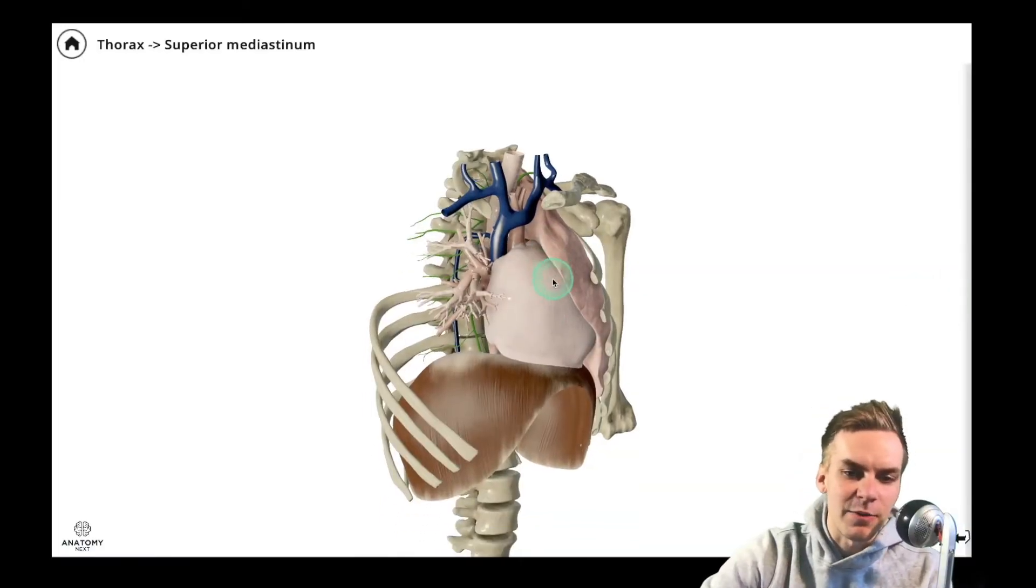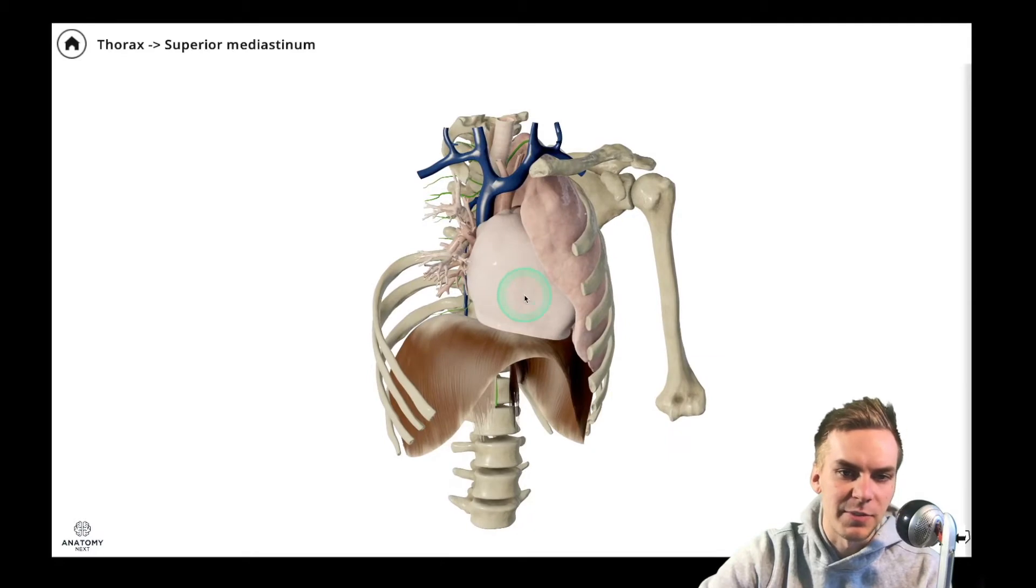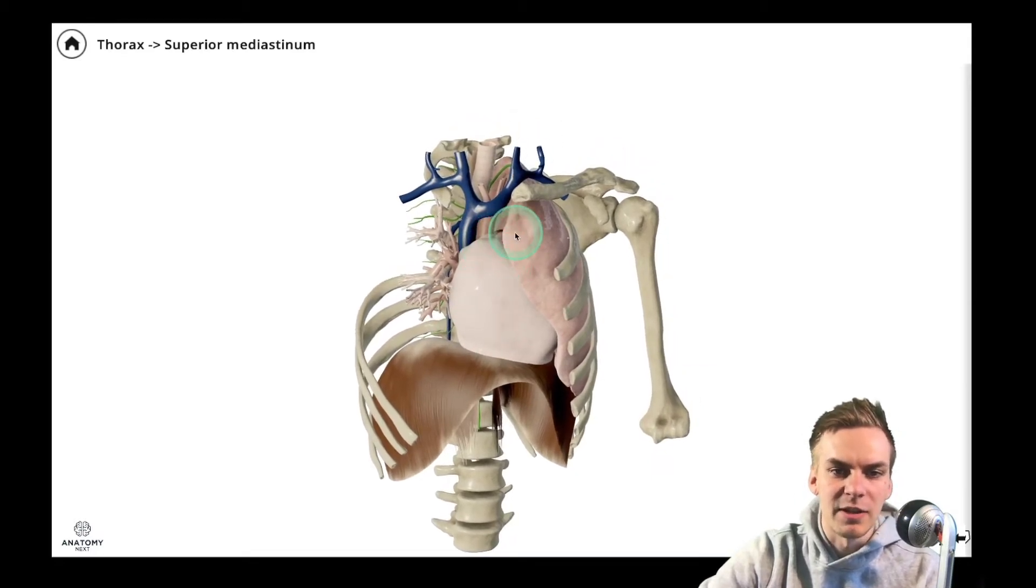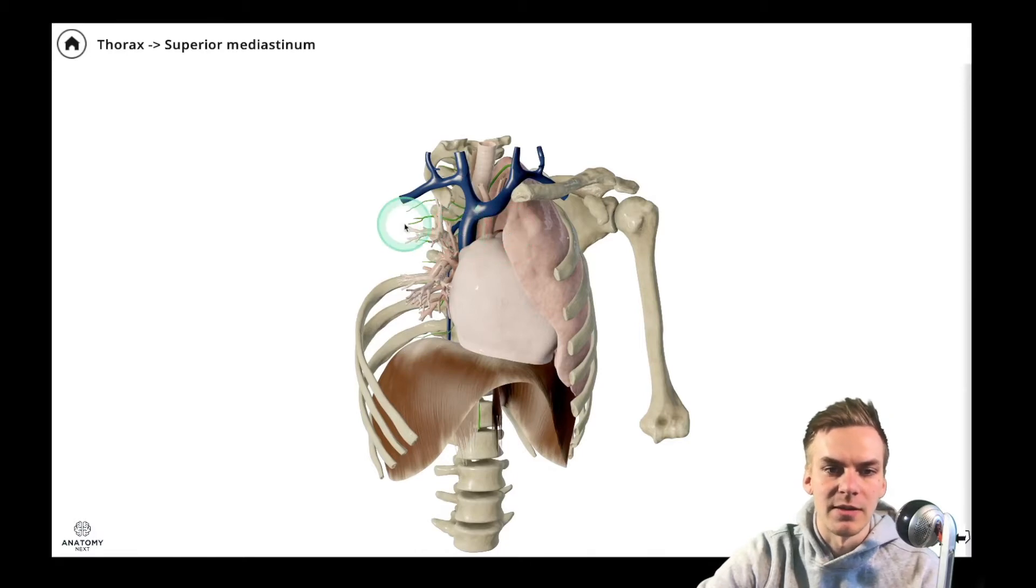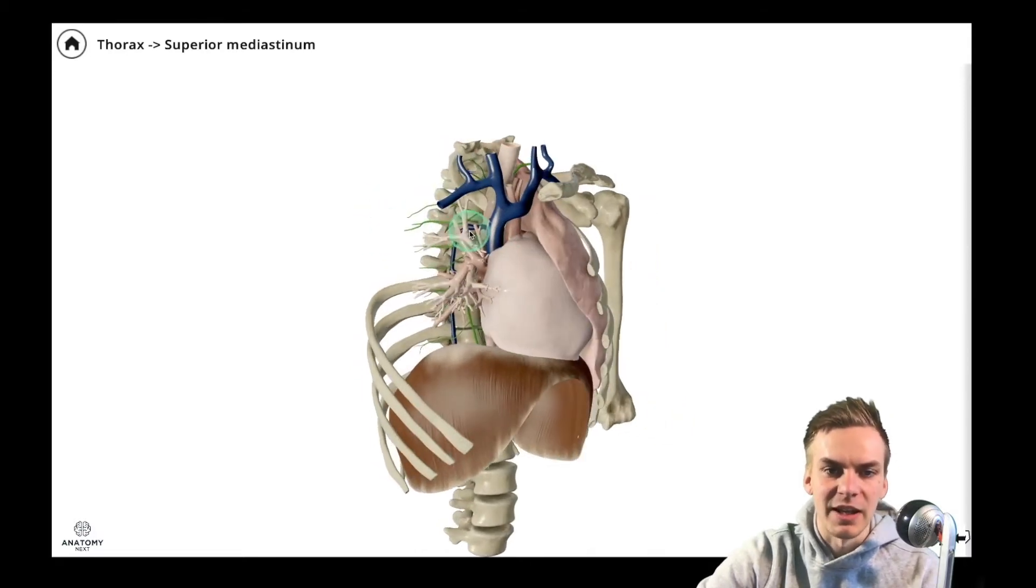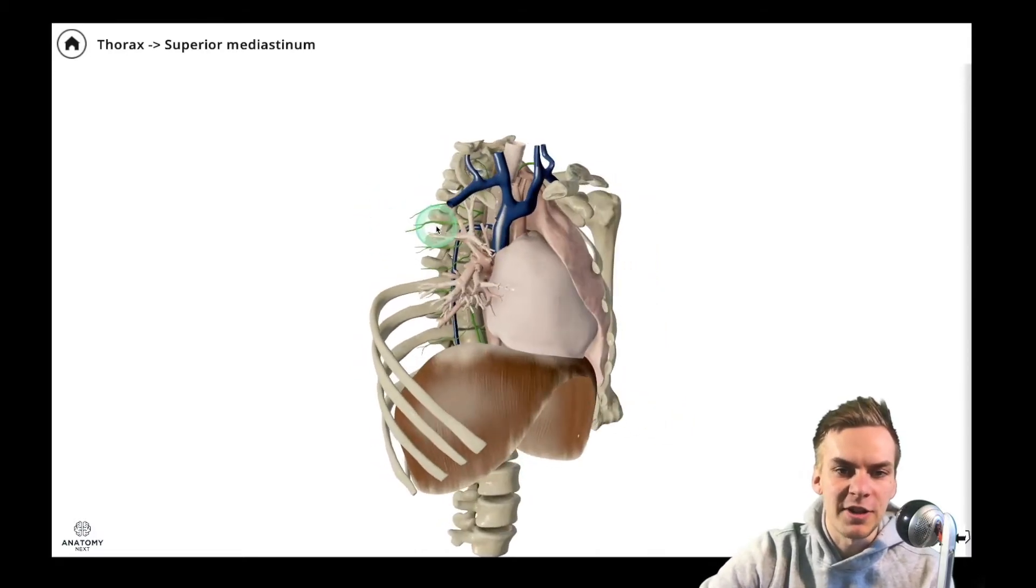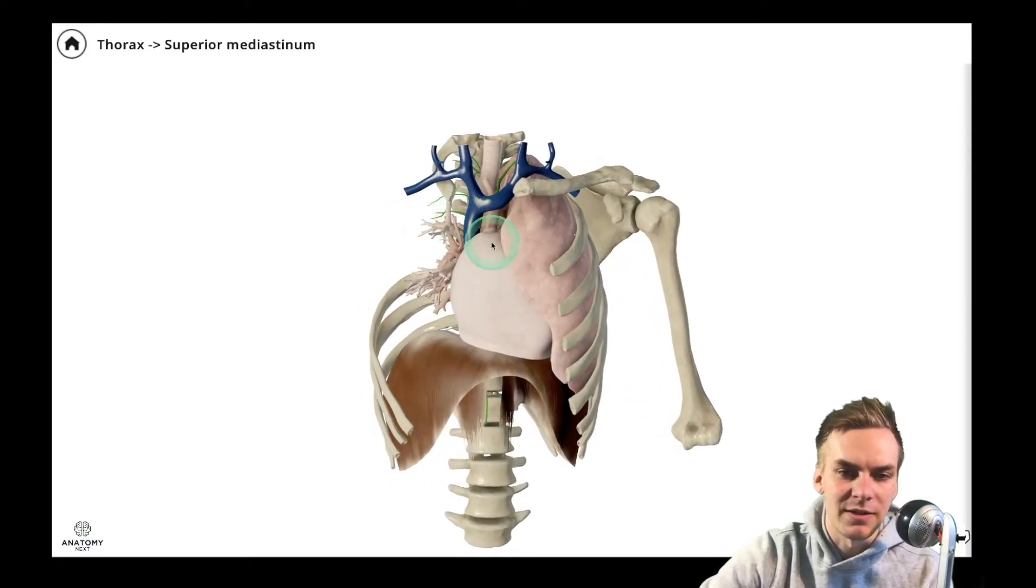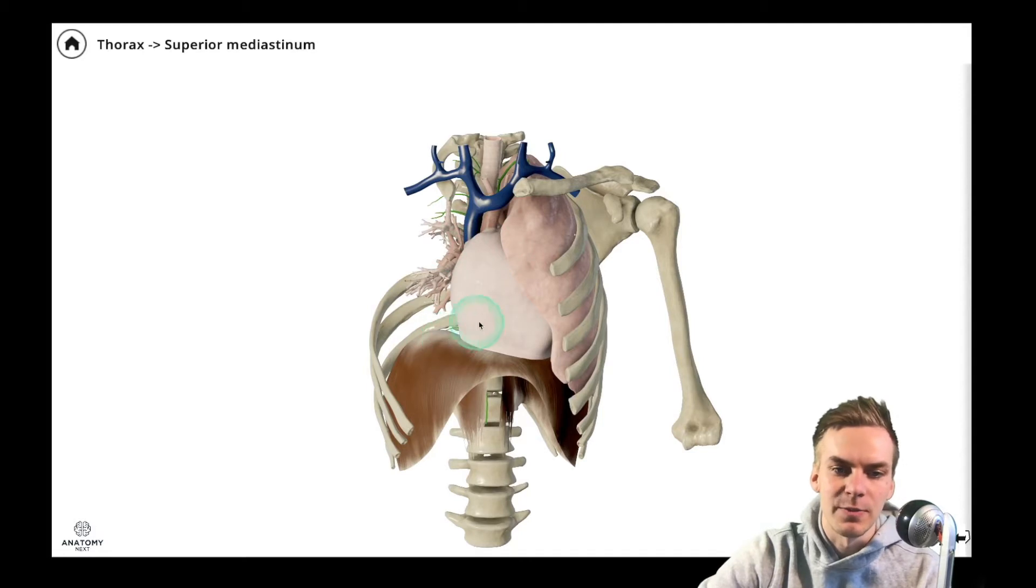As you can see here we have removed the right lung to expose the mediastinum and the superior mediastinum. As you remember, it is located above the transverse thoracic plane and in general in this specimen everything above the heart covered by the pericardium could be considered the superior mediastinum.